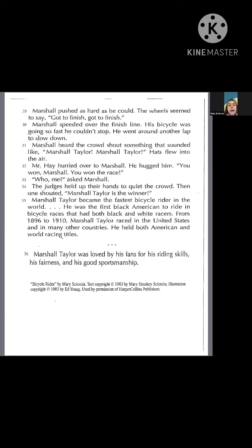Hats flew into the air. Mr. Hay hurried over to Marshall. He hugged him. "You won, Marshall! You won the race!" "Who, me?" asked Marshall. The judges held up their hands to quiet the crowd. Then one shouted, "Marshall Taylor is the winner!" Marshall Taylor became the fastest bicycle rider in the world. He was the first black American to ride in bicycle races that had both black and white racers. From 1896 to 1910, Marshall Taylor raced in the United States and in many other countries. He held both American and world racing titles. Marshall Taylor was loved by his fans for his riding skills, his fairness, and his good sportsmanship.